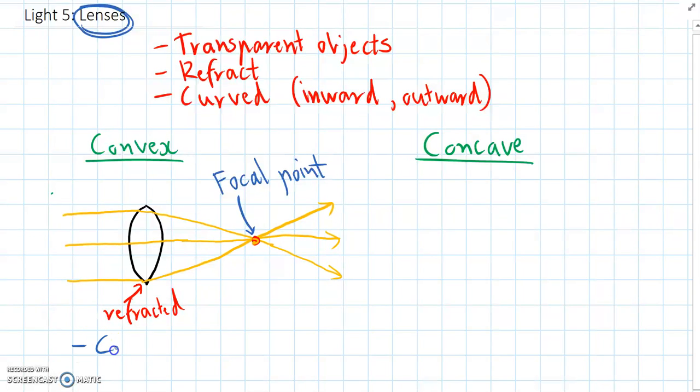So overall we can say that convex lenses bend light inward to a single point.